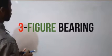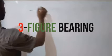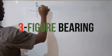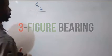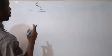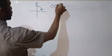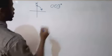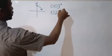In three-figure bearing, you take your reading from the north, and you read the angle in a clockwise direction. All your angles are written in three figures. For example, three degrees will be written as 003, and 27 degrees will be written as 027 degrees.